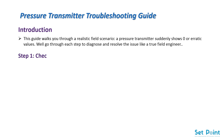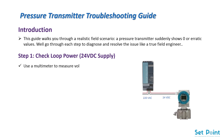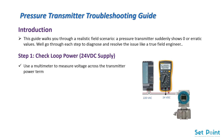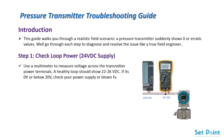Step 1: Check loop power — 24 volt DC supply. Use a multimeter to measure voltage across the transmitter power terminals. A healthy loop should show 22 to 26 volt DC. If it's 0 volt or below 20 volt, check your power supply or blown fuses.